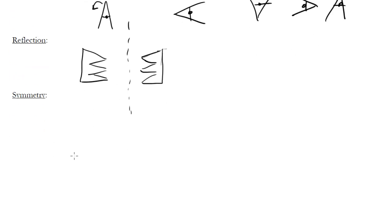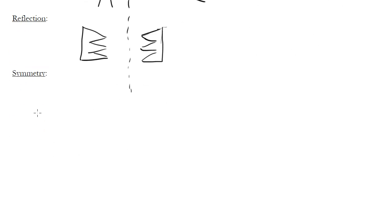Finally, there's symmetry. You can have line symmetry, which we've just seen, and you can have point symmetry, which is when you rotate an object and it maintains the same appearance. Symmetry is about the idea that there are certain lines or points about which you can reflect or rotate something, and it will look the same when you perform that operation.